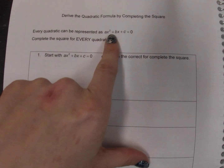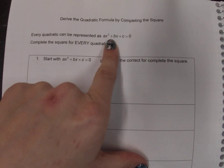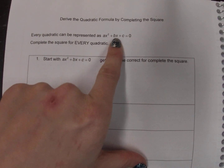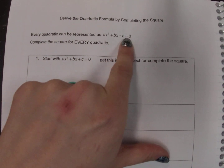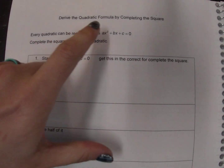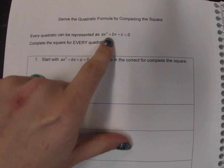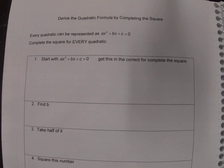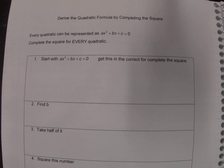We know that every quadratic can be represented as ax squared plus bx plus c equals zero, where a can be any value, b can be any value, and c can be any value — whether they're fractions, decimals, or any number they want to be.